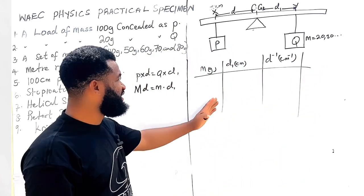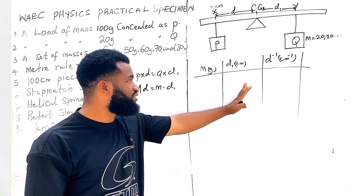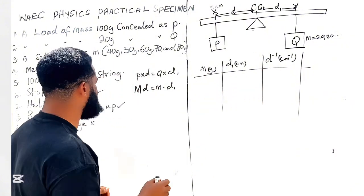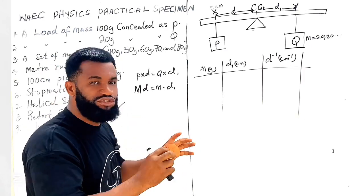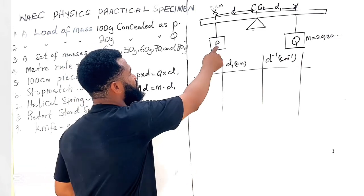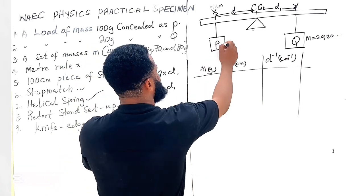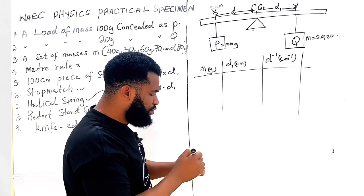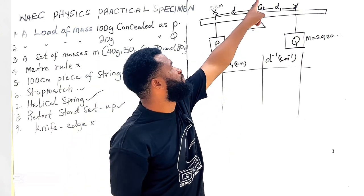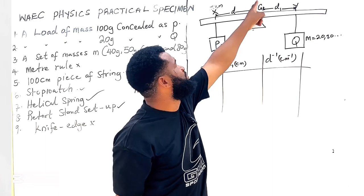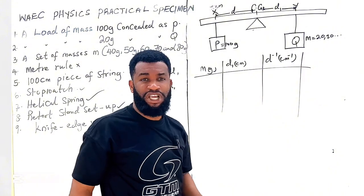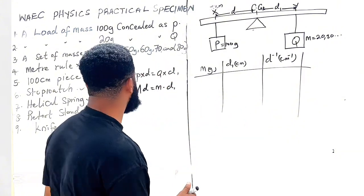So when they ask you to find d inverse, they will ask you to now plot m against d inverse. So see what will happen. M times d will be recorded. So in your center, WAEC knows that this is 100 grams. WAEC knows that this is 100 grams.